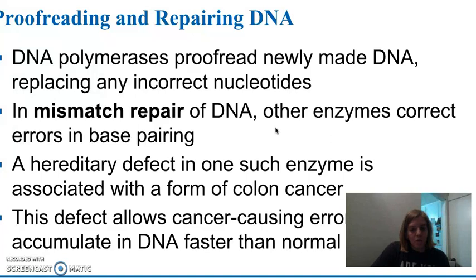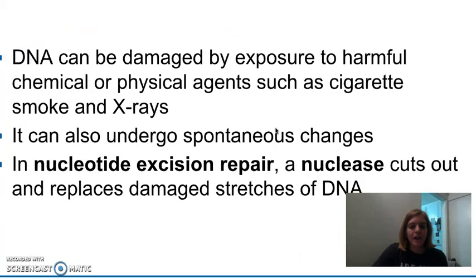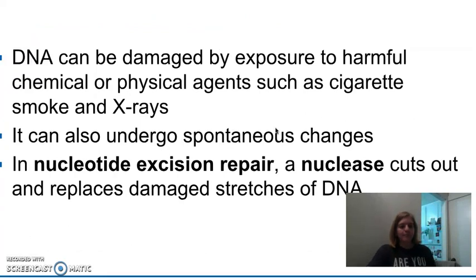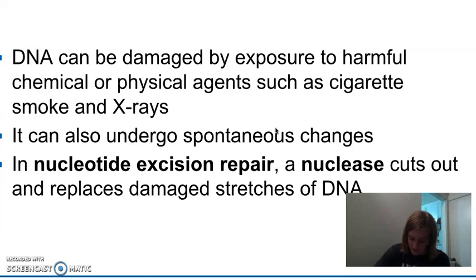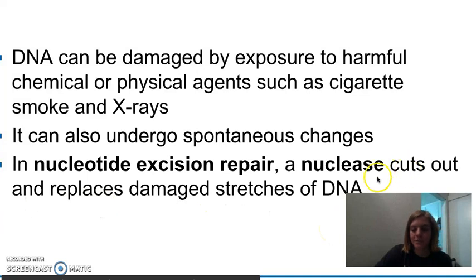If both of these are not fully checked or something goes wrong, occasionally something can slip through the cracks and you might end up with what's known as a mutation. Mutations can be a result of a variety of things, but you want to avoid them if possible. Mismatch repair is one way, proofreading is another way, and then there's nucleotide excision repair where an enzyme known as nuclease can cut out and replace damaged stretches of DNA.